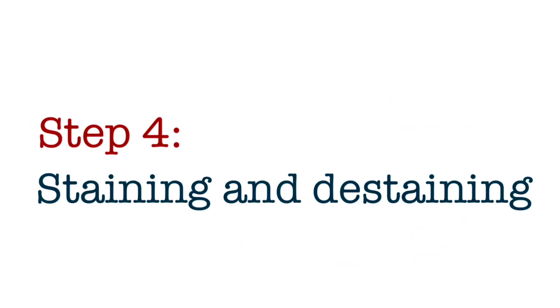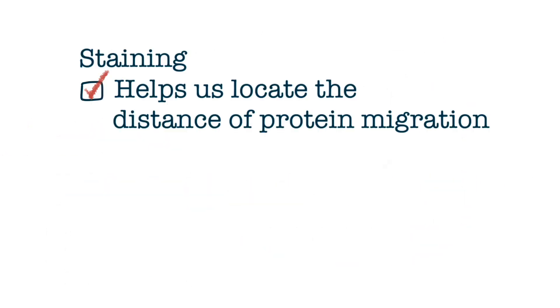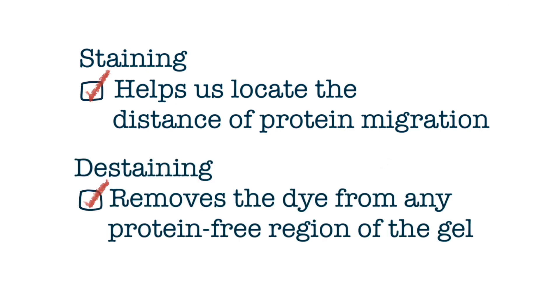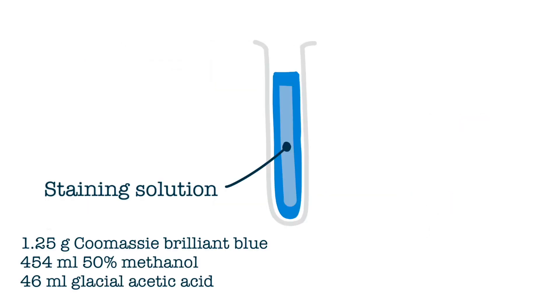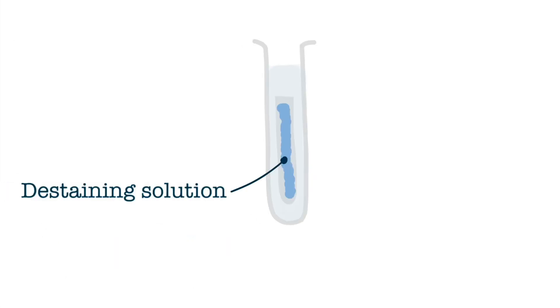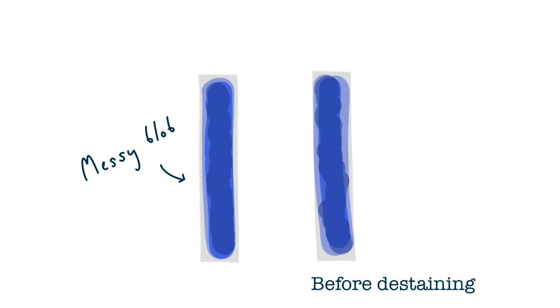Step 4: Staining and Destaining. Staining helps us locate the distance of protein migration, and destaining removes the dye from any protein-free region of the gel. Weber and Osborn stained the gels with Coomassie Brilliant Blue Dye solution. They then destained the gels with a destaining solution made up of these chemicals, so that we can go from this to this.